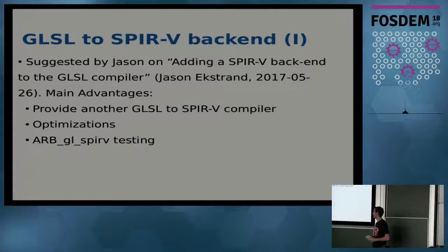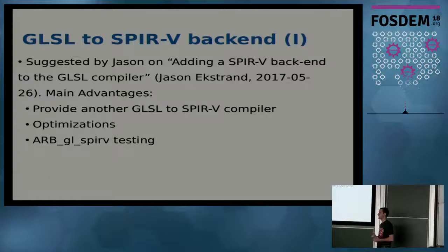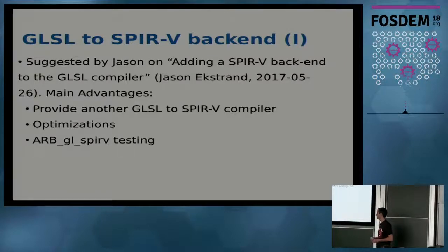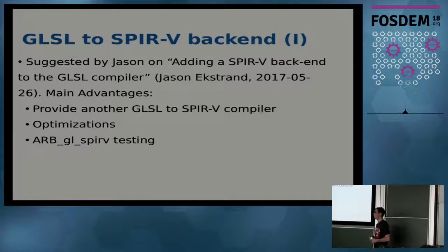The other approach, first mentioned in May, was to create a GLSL-to-SPIR-V back-end inside MESA itself. The main advantage would be providing an alternative to glslang as the main way to convert GLSL shaders to SPIR-V — for example, I believe the last Doom game used glslang to convert GLSL to SPIR-V. Another advantage would be optimizations from the GLSL compiler. Question from audience: if MESA developers are supposed to run all Shader Runner tests twice every time they want to check a patch?